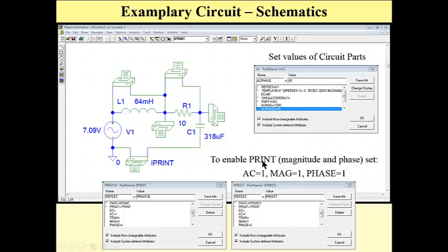Its root mean square value is 7.09V and phase angle set here is 45 degrees. To enable print magnitude and phase, we have to set one or yes. We have to print one or yes here.